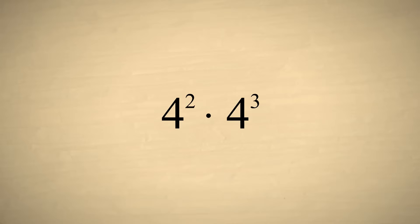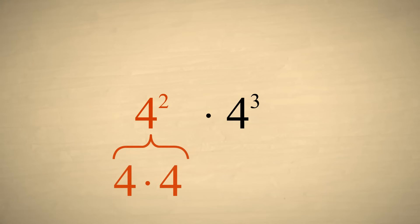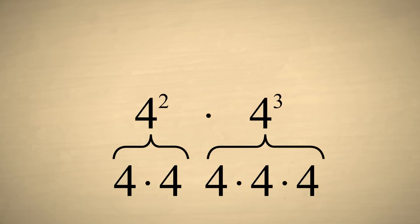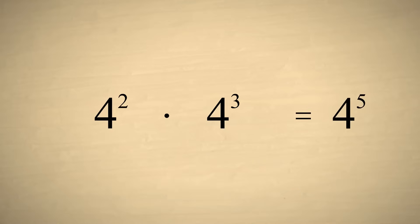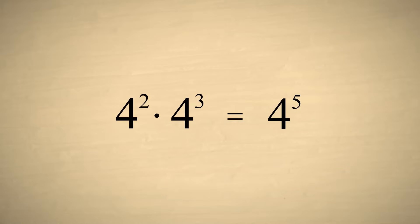Interesting things happen when we multiply exponential expressions together. For example, say that we multiply four-squared times four-cubed. Since four-squared is four times four, and four-cubed is four times four times four, the result is five fours multiplied together, which is equivalent to four to the fifth power. So four to the second power times four to the third power is four to the fifth power.